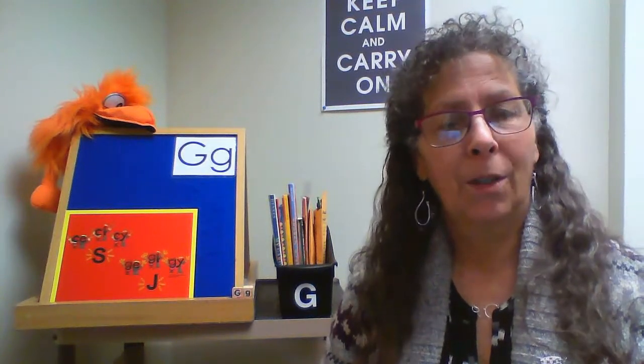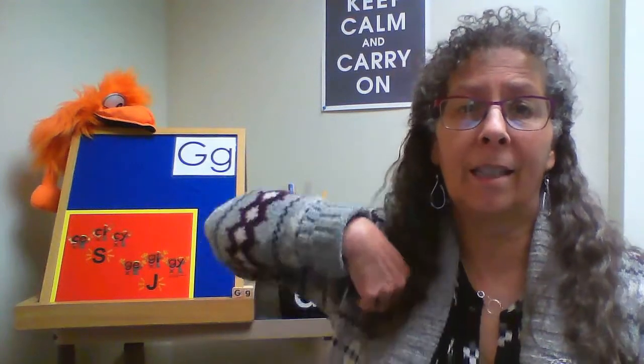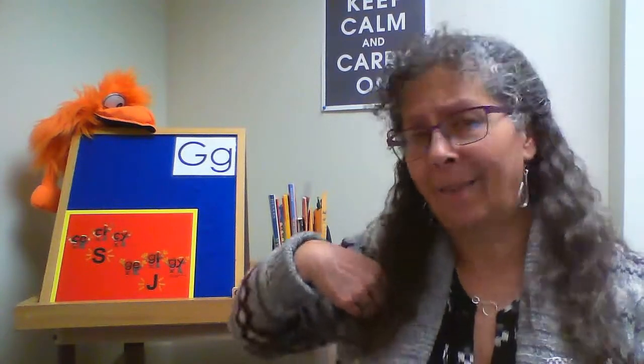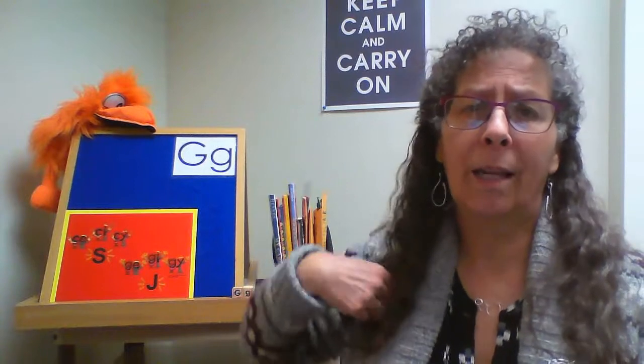Another fun activity for a letter G storytime is 'Mother Goonie Bird.' You sing: 'Mother Goonie Bird had many chicks, many chicks had Mother Goonie Bird, and they couldn't walk and they couldn't talk, they could only go like this — one wing.' Then all the children flap one wing while you add both wings, one foot, both feet, nodding their head, turning around, and finally sitting down — hopefully ready for another story with letter G in the title.